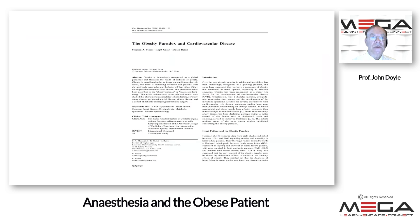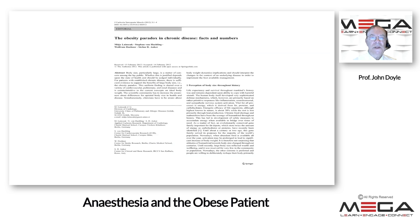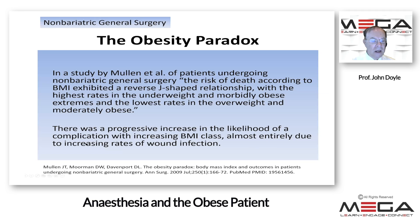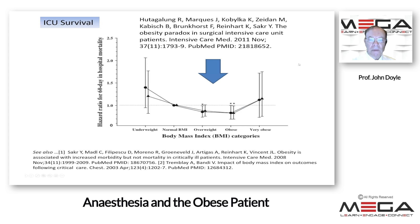Looking at surgical and ICU patients specifically, two review articles are relevant: The Obesity Paradox in Cardiovascular Disease and The Obesity Paradox in Chronic Disease: Facts and Numbers. In a study of patients undergoing non-bariatric general surgery, the risk of death exhibited a reverse J-shaped relationship, with the highest rates in the underweight and morbidly obese extremes and the lowest rates in the overweight and moderately obese patients. There was a progressive increase in complications with increasing BMI class, almost entirely due to increased wound infections. For both males and females, overweight and obese ICU patients have a survival advantage over those with normal BMI, underweight, or very obese patients — hence the obesity paradox.